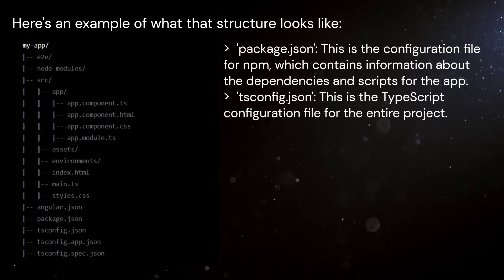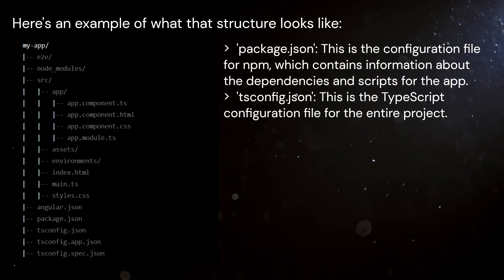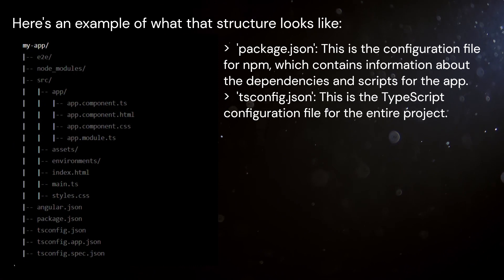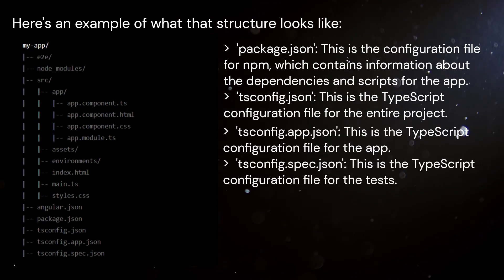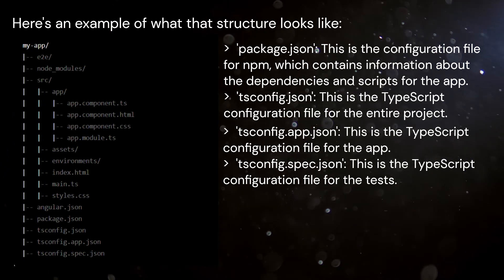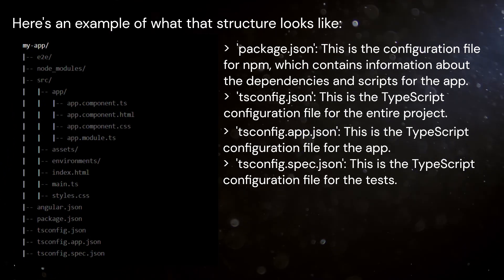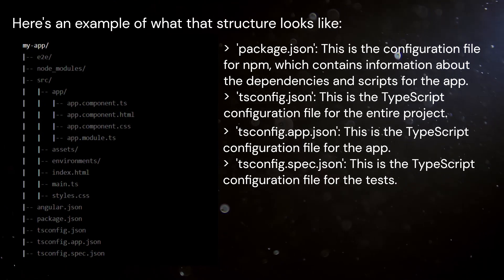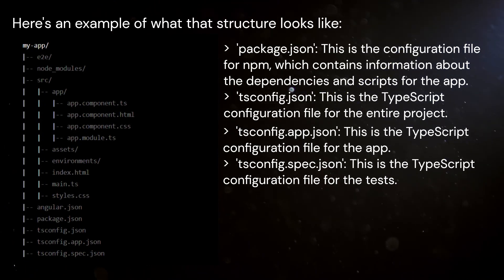SRC/tsconfig.json: This is the configuration file for NPM, which contains information about the dependencies and scripts for the app. tsconfig.json: This is the TypeScript configuration file for the entire project. tsconfig.app.json: This is the TypeScript configuration file for the tests.